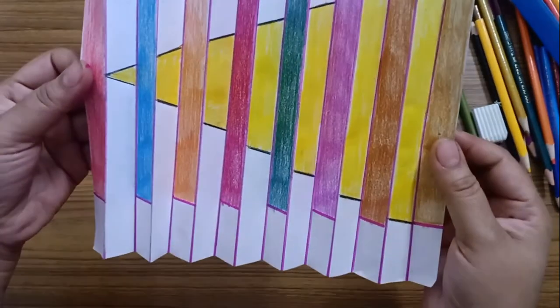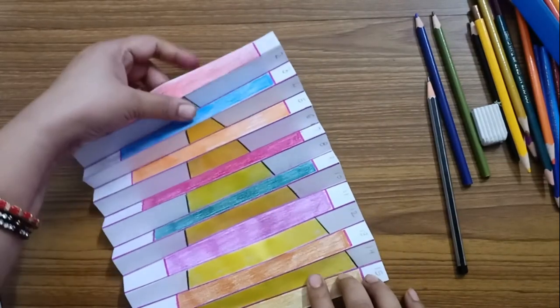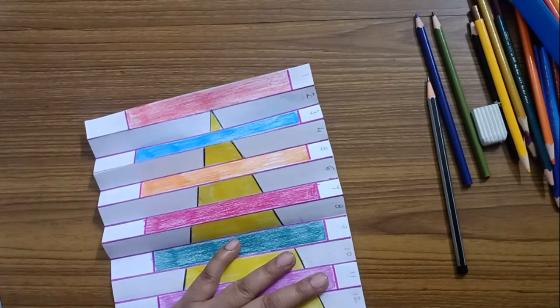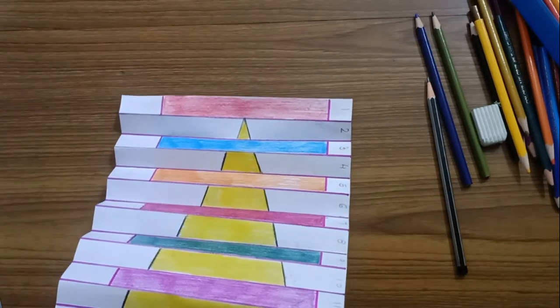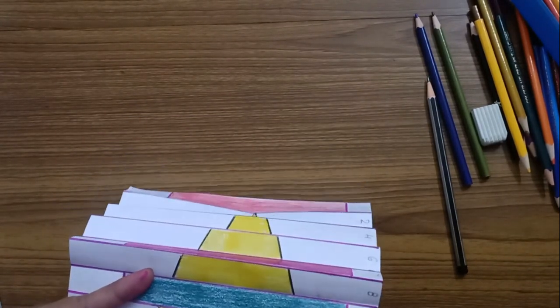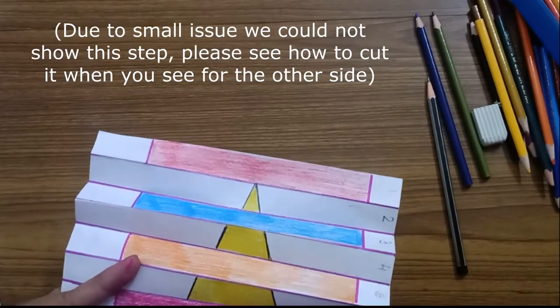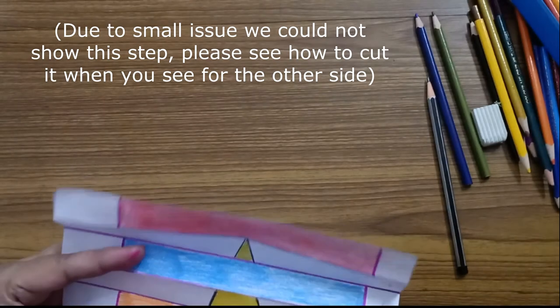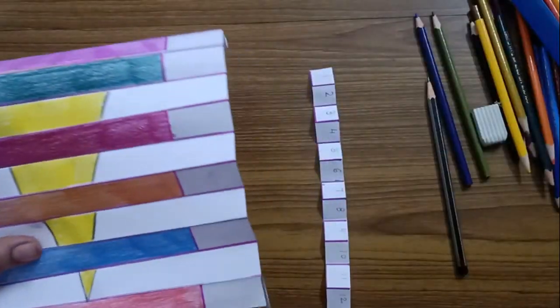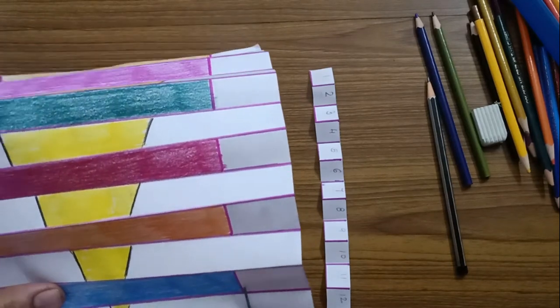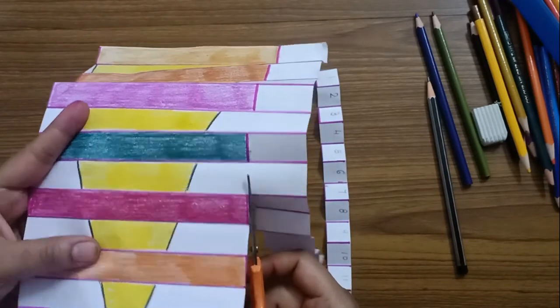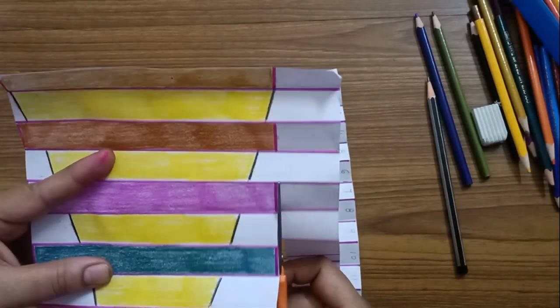Now what we are going to do, we are going to cut it. Cut this from where we have drawn the line. Like this. Like I have told you, don't leave the scissor on your own. Take the help from any adult or do it under the supervision of any adult.